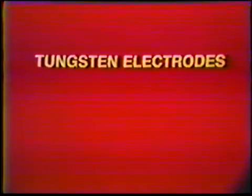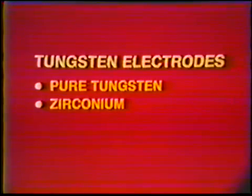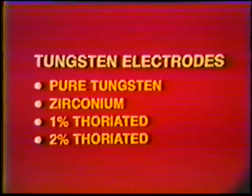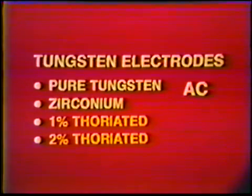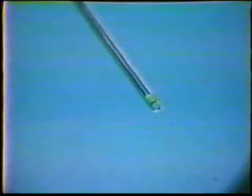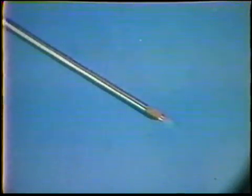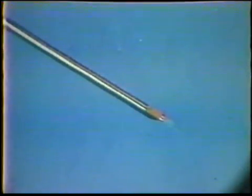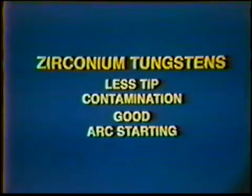There are four types of tungsten electrodes: pure tungsten, zirconium, 1% thoriated, and 2% thoriated. Pure tungsten and zirconium tungstens are used with alternating current. Pure tungsten is normally used for welding with AC. Zirconium tungstens are used for making high-quality welds requiring X-ray inspection. The high current carrying capacity of these electrodes reduces the chance of tungsten inclusions. Zirconium electrodes have a high resistance to contamination and good arc-starting capabilities.